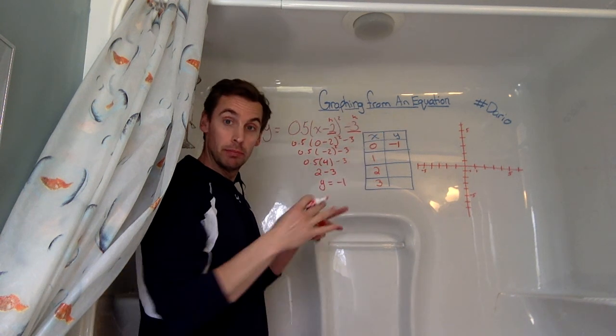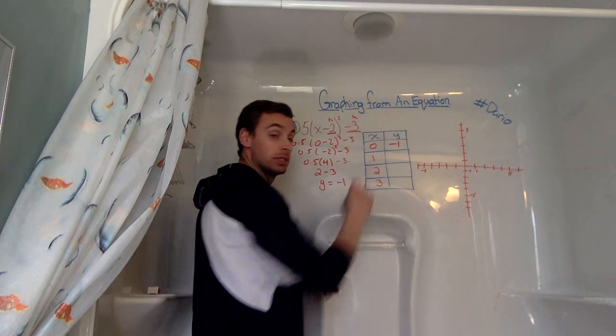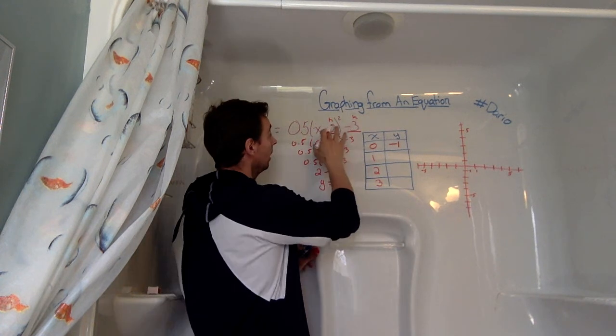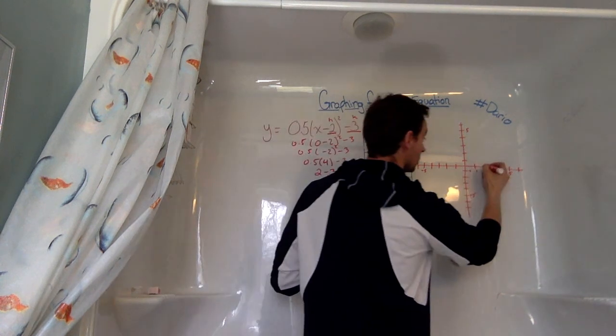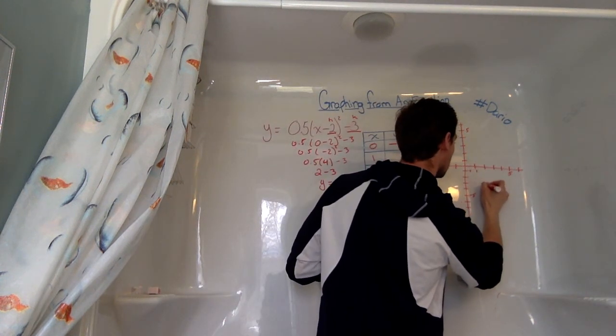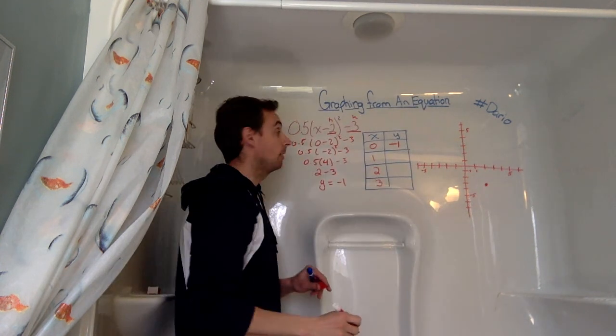So we can already put in whatever our vertex is. So I'm going to go ahead and put it in at 2, negative 3. So 2, negative 3, and we're going to put our vertex right there.